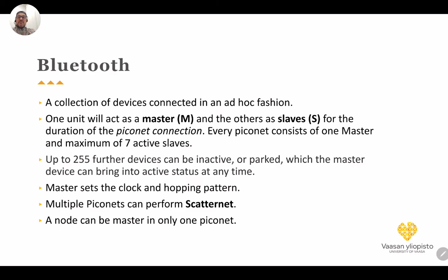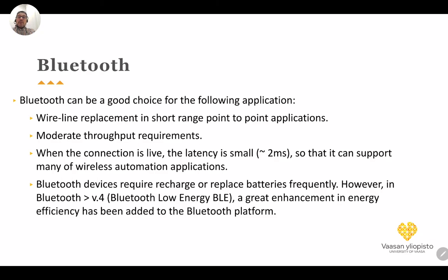Bluetooth is a good choice for wire-line replacement in short-range point-to-point communication. When the connection is live, latency is very small — only 2 milliseconds — making it a great solution for wire-line replacement in automation applications. It provides moderate throughput of up to 3 Mbps data rate, with actual throughput around 1 Mbps or slightly less, around 700 kbps.